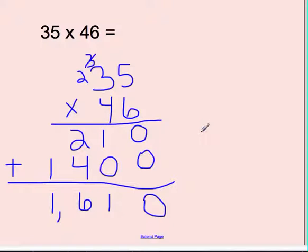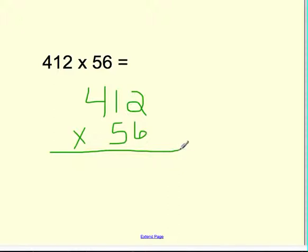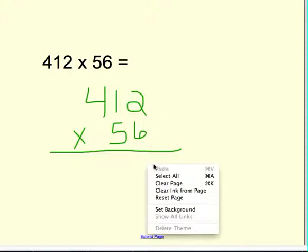We're going to look at one more. And this one will be a triple digit by a double digit. When multiplying a triple digit by a double digit, you always put the bigger number on top. So 412 times 56. So I want you to say to yourself, where should Mrs. Lau begin? Yep. You're going to begin on the bottom right. So 6 times 2 is 12.